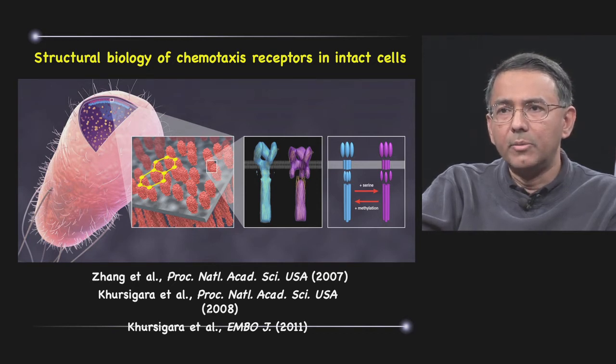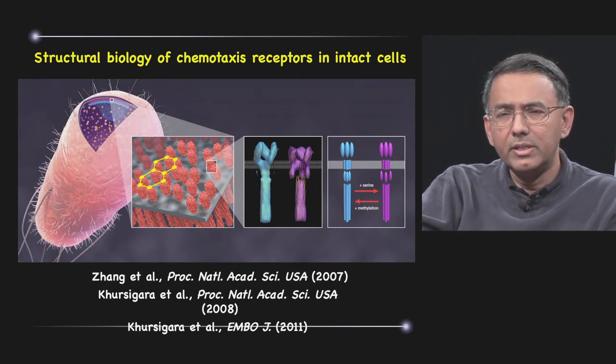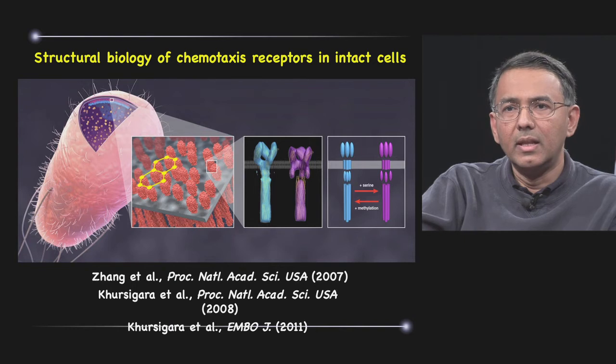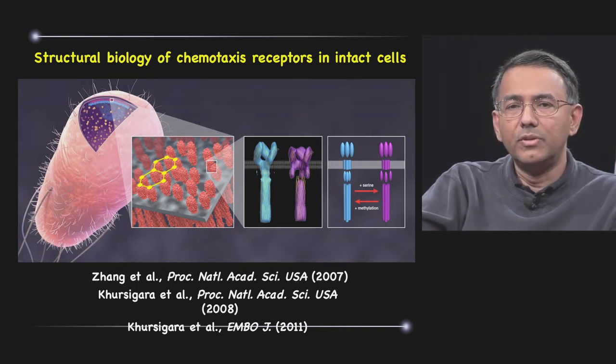We show in the case of the chemotaxis receptor that we can drive it from close to open conformations by ligand binding, and also more recently have shown that this type of information can be used to compute some of the physiological responses of the cell, starting all the way from tomography and testing it using physiological assays.